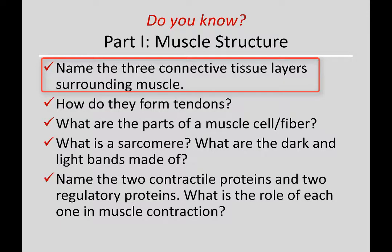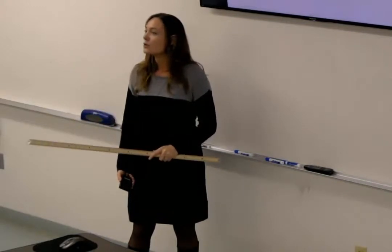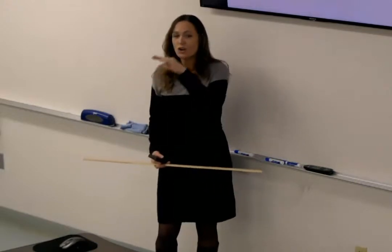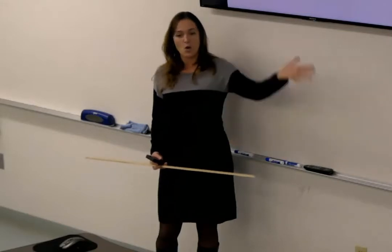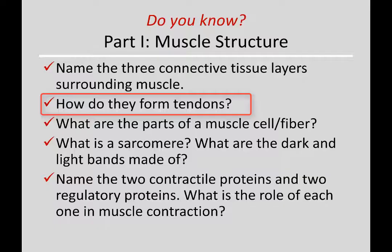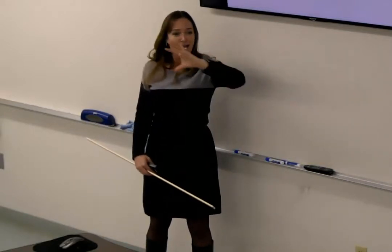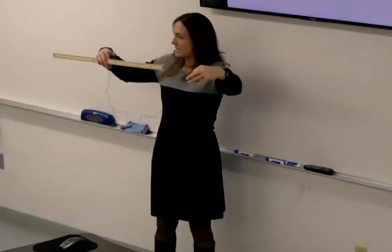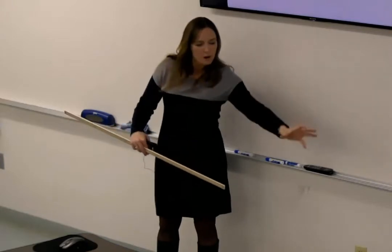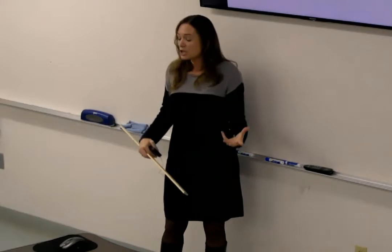Name the three connective tissue layers surrounding muscle. Endomysium surrounds one cell. Perimysium is a fascicle or a group of cells. And epimysium is the whole entire muscle. How do they form tendons? It's the Tootsie Roll wrapper — you have these ends of all the mysiums, and they just continue where the muscle is no longer there. So a muscle really is connective tissue from bone attachment origin to bone attachment insertion, with muscle cells in between doing the contracting, pulling as one continuous thing. It's quite a beautiful design.